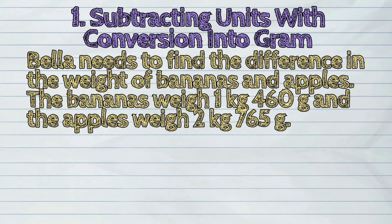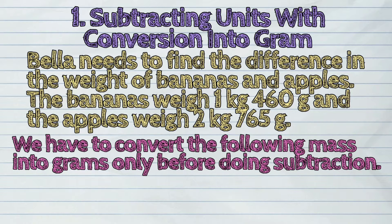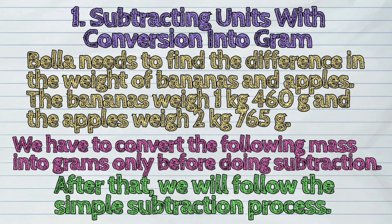Bella needs to find the difference in the weight of bananas and apples. The bananas weigh 1 kilogram 460 grams, and the apples weigh 2 kilograms 765 grams. First, we have to convert the following mass into grams only before doing subtraction. After that, we will follow the simple subtraction process.